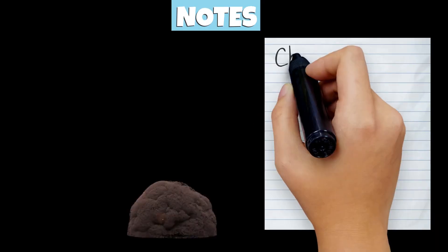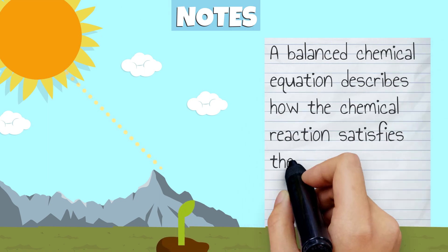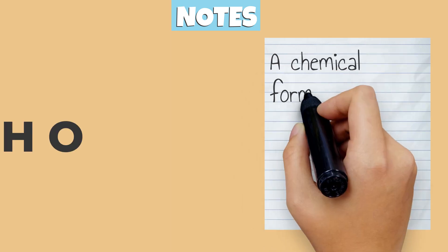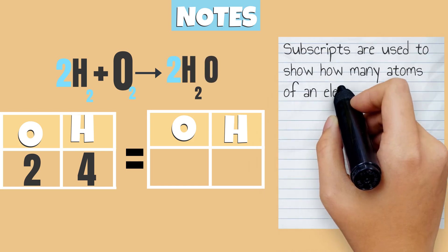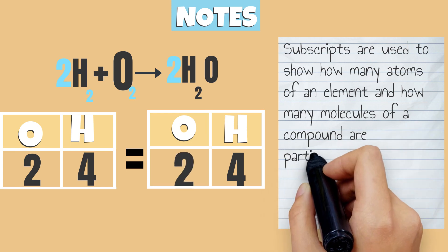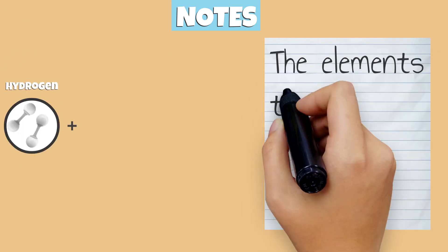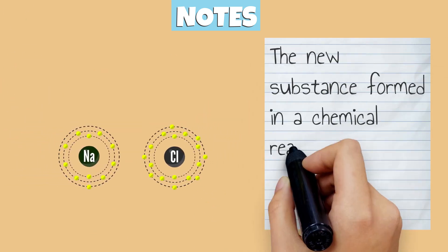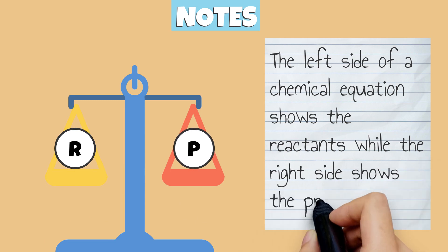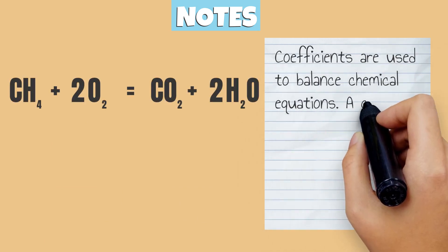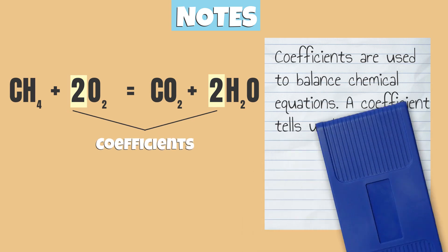Let's review what we just learned. Chemical equations describe a chemical reaction. A balanced chemical equation describes how the chemical reaction satisfies the law of conservation of mass. A chemical formula is the identity of an element in a chemical reaction. Subscripts show how many atoms of an element and how many molecules of a compound are participating in the reaction. Subscripts for the number one are not used. The elements that react are called reactants, and the new substance formed is called the product. The left side of a chemical equation shows the reactants while the right side shows the products. Coefficients are used to balance chemical equations and tell us how many molecules of a substance are involved in the reaction.